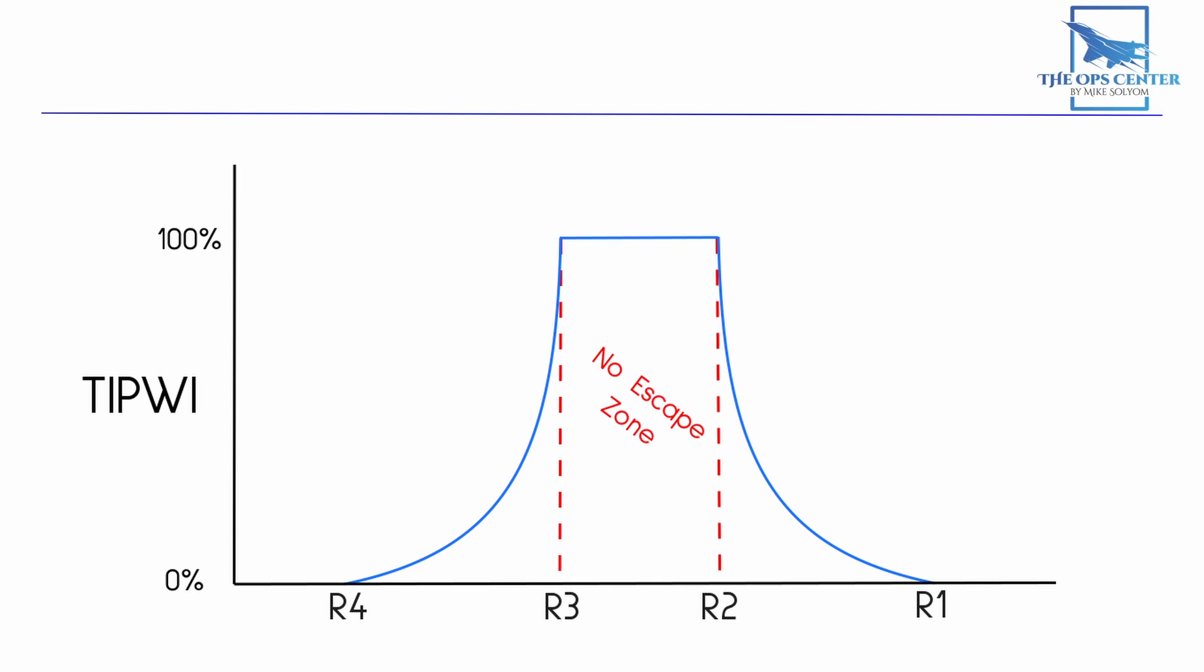You can practically see the missile speed profile drawn out. At maximum and minimum ranges where the speed is lowest, you can see the TIPWI is 0%. But it's 100% where the speed peaks.